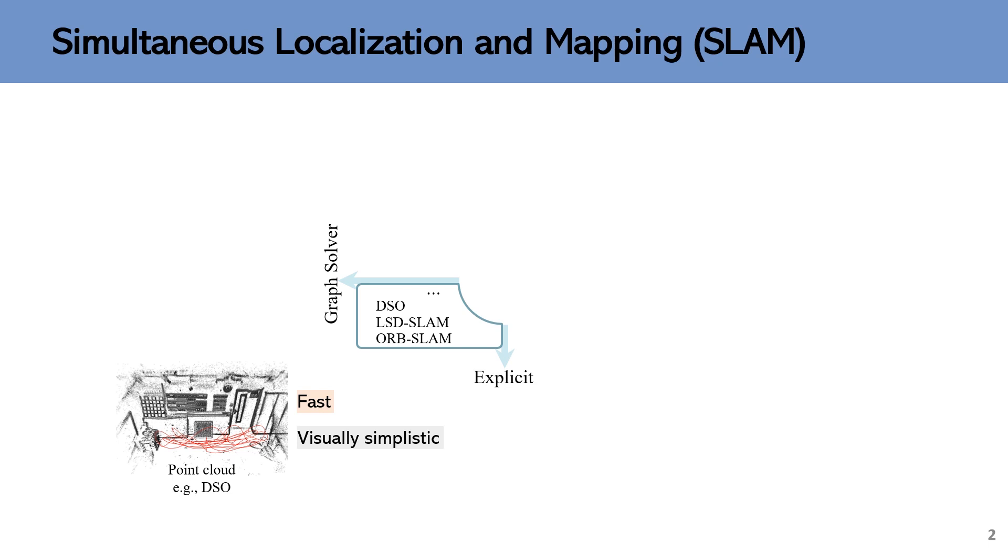Classical methods widely adopt factor graphs to model constrained optimization problems. To achieve real-time performance, SLAM methods incrementally propagate their pose estimation while avoiding expensive operations. They maintain a sparse or semi-dense point cloud online, which is visually simplistic.